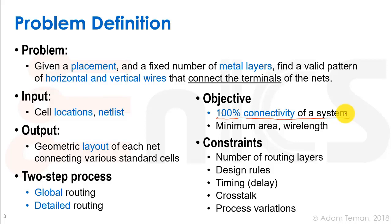The constraints: we have a certain fixed number of routing layers and they have different types of design rules, all the design rules, different widths, spacing and so forth. We want to meet our timing constraints. We have our SDC and we want to meet our timing, our max delay and our min delay. We don't want to have crosstalk problems after finishing the routing, and we want to deal with process variations as well.